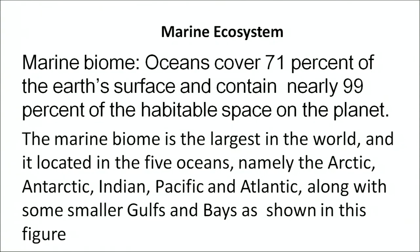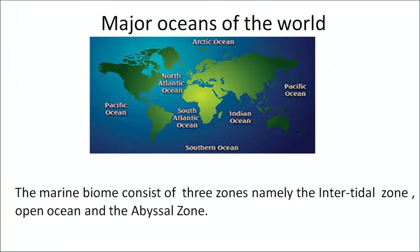The marine biome covers nearly 71 percent of the Earth's surface and contains nearly 99 percent of the habitable space on the planet. It is the largest biome in the world and is located in five oceans: the Arctic, Antarctic, Indian, Pacific, and Atlantic, along with some smaller gulfs and bays. This figure shows the marine biomes containing the five main oceans.